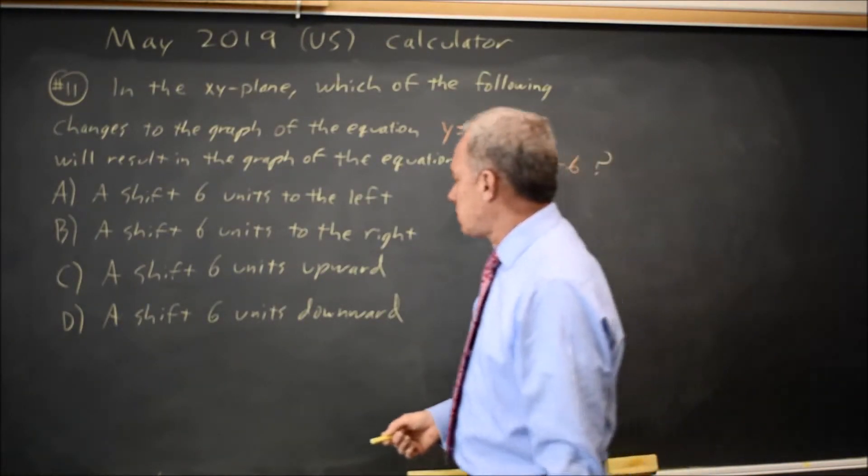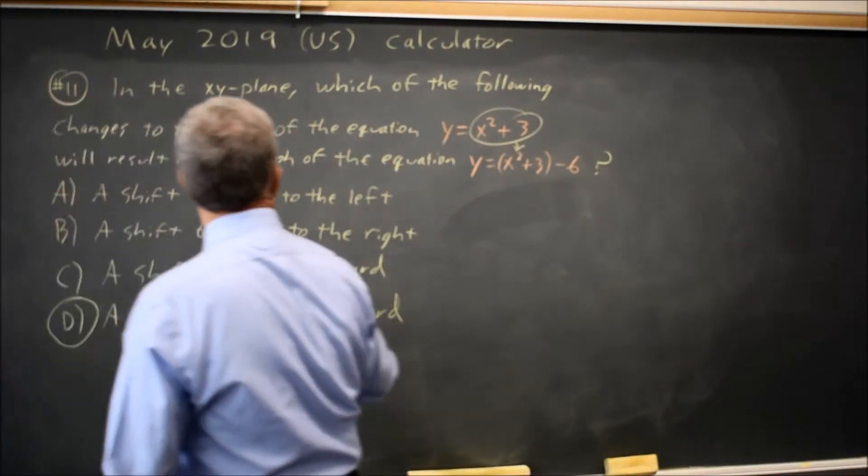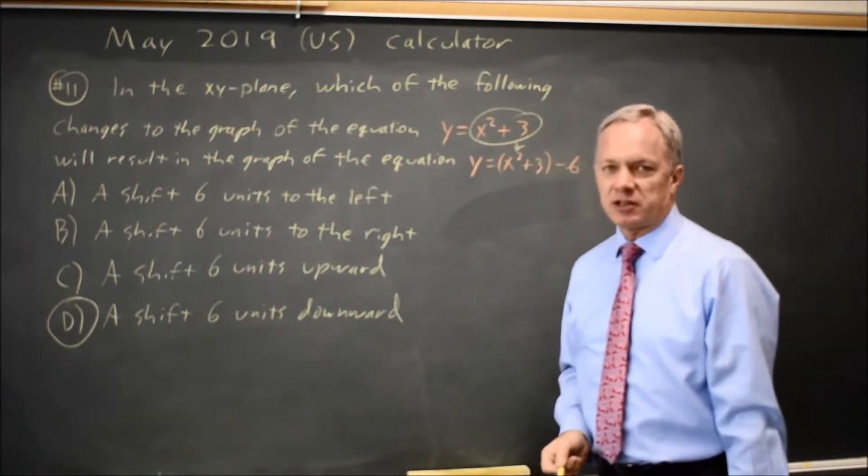So for each X, we've shifted 6 units downward when we subtract 6 to get our Y value.